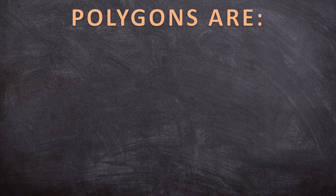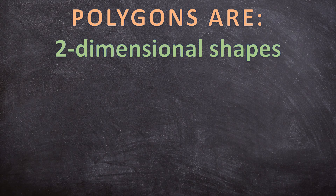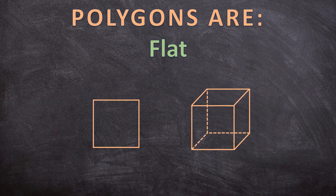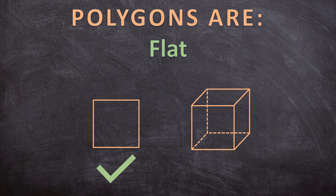For the first characteristic of a polygon, polygons are two-dimensional shapes, so in other words they are flat shapes. Let's look at the following two shapes. The first shape on the left is a square — that is a flat shape. But the shape on the right hand side is a cube, that is a three-dimensional shape. So a polygon is flat, so the square will be a polygon but the cube will not be a polygon.